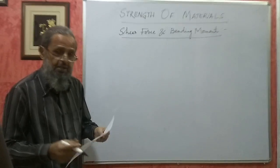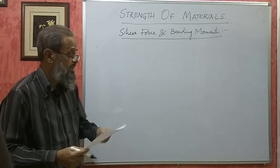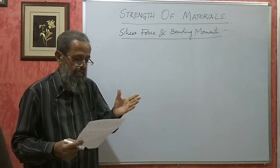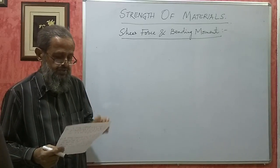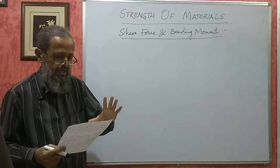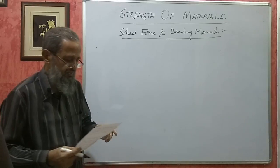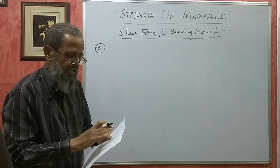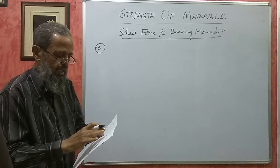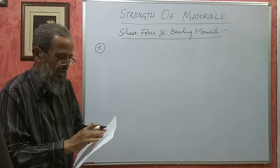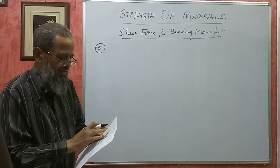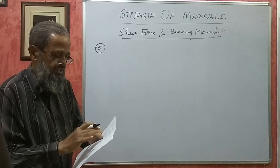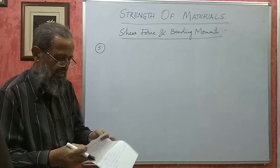In the previous clip, we discussed the theory concerning shear force and bending moment diagrams of beams. Now I am taking problems. I have selected a few problems from the question bank issued by the Board of Technical Examination. I am taking the fifth problem. A cantilever beam of length 3 meters subjected to point loads of 5 kilonewton, 8 kilonewton and 12 kilonewton at distances of 1 meter, 1.5 meter and 2.5 meter from the free end. Draw SFD and BMD. This problem can fetch you about 8 to 10 marks.